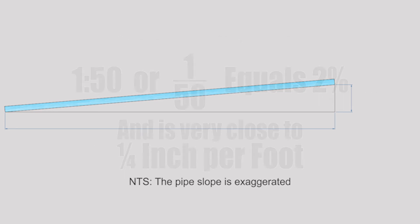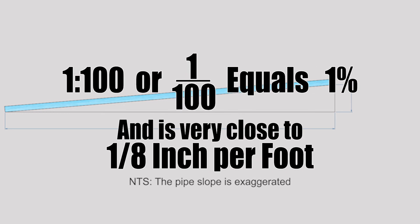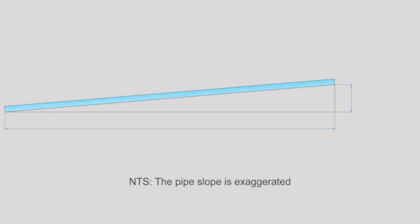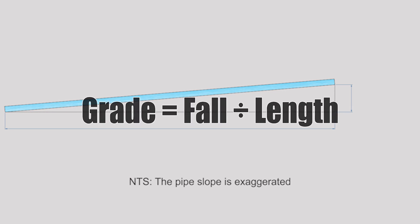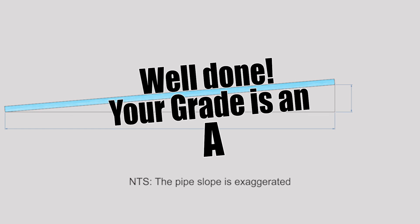As a takeaway: 1 in 50 grade equals 2 percent grade, and it's also really close to quarter inch per foot. 1 in 100 grade equals one percent grade, and that's really close to eighth of an inch per foot. It is possible to calculate grade from a known length and drop using the same formula, but it's not very practical in the field. Stay tuned for the next video where we talk about code requirements around trap arms and floor drains. Have a fantastic day!